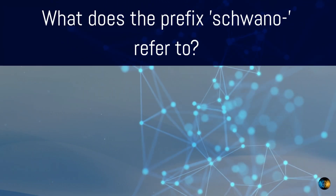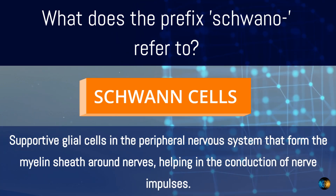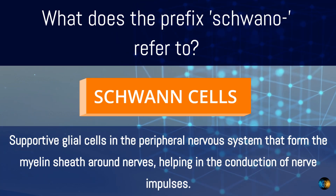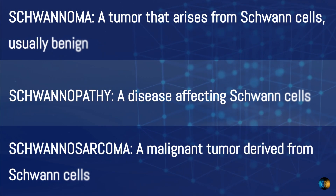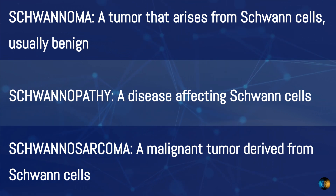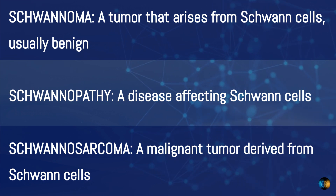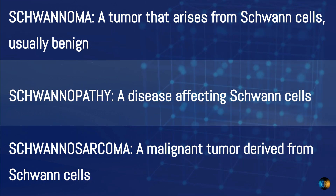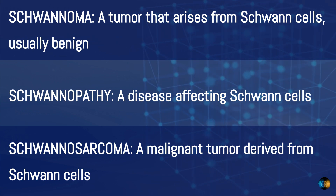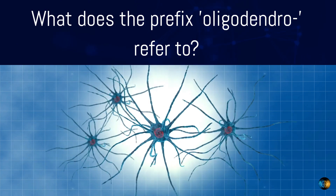What does the prefix 'schwano' refer to? Schwann cells — supportive glial cells in the peripheral nervous system that form the myelin sheath around nerves, helping in the conduction of nerve impulses. For example, schwannoma is a tumor that arises from Schwann cells, usually benign; schwannopathy is a disease affecting Schwann cells; and schwannosarcoma is a malignant tumor derived from Schwann cells.